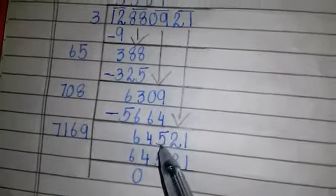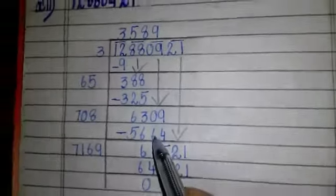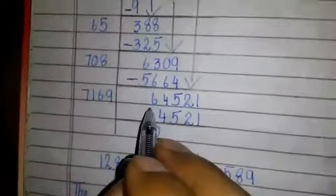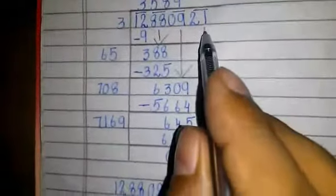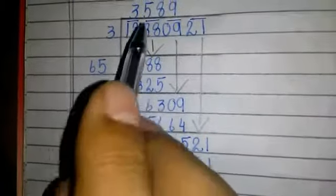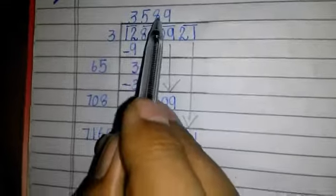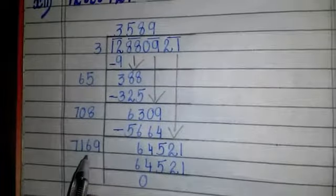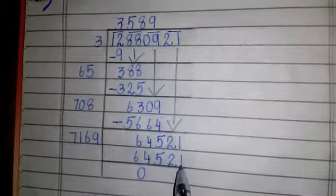9 minus 4 is 5, 10 minus 6 is 4, 12 minus 6 is 6. And bring the last pair here, 21. And multiply 358 by 2, we got 716. Take 9 as a root. 9×9. 1×9=9, 1×8 carry.